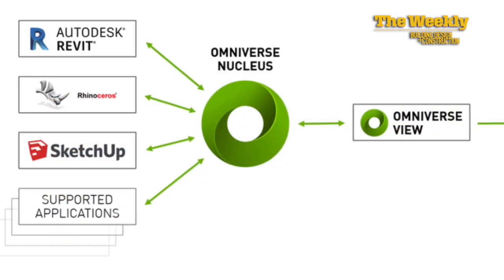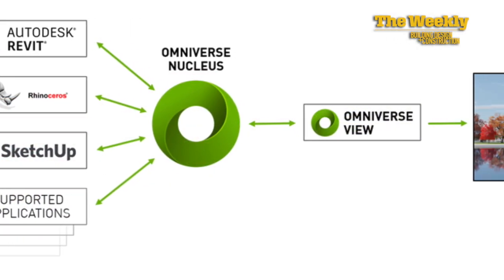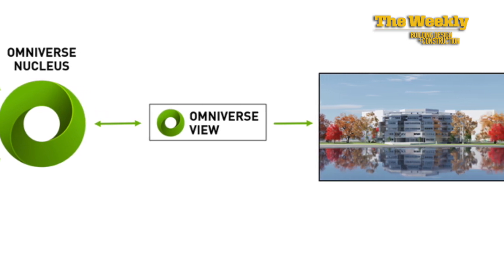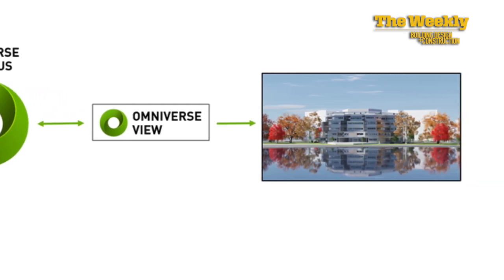Omniverse is based on the Universal Scene Description, or USD, originally developed by Pixar. Think of it as a blueprint for how communication happens between 3D scenes and their elements. With that common foundation, NVIDIA adds technologies like real-time ray tracing with photorealistic rendering, applying multiple GPUs to do it in real time. It also controls what data is transferred between locations for maximum efficiency, enabling fully real-time collaboration.